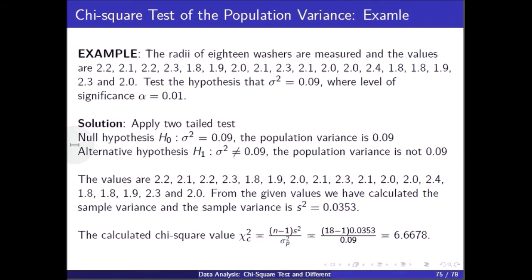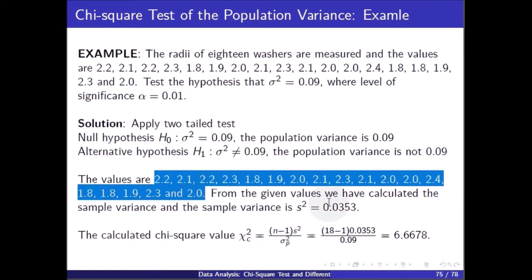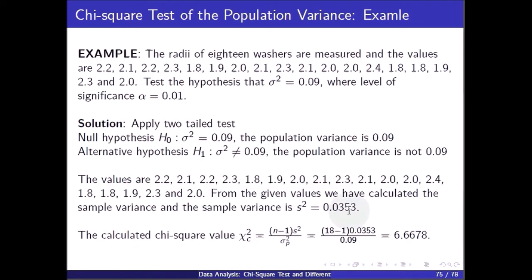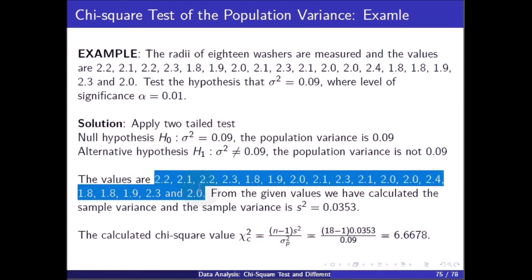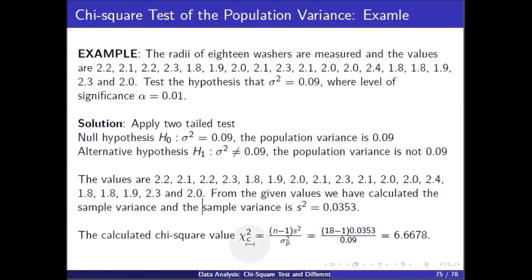The population variance is not 0.09 under the alternative. We calculate the sample variance from the given values; the sample variance is 0.0353. The calculated chi-square value is (n-1) times s square divided by the assumed variance. With a total sample size of 18, this gives 17 times 0.0353 divided by 0.09, and the calculated chi-square value is 6.6678.